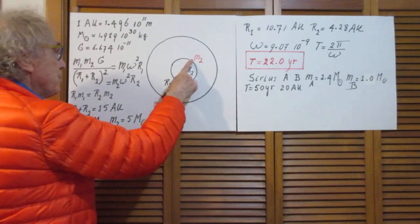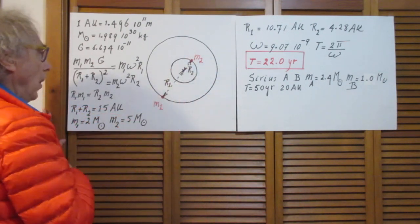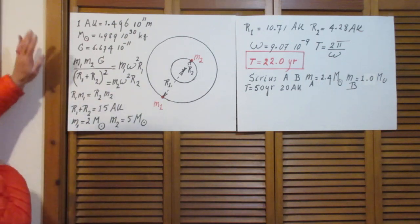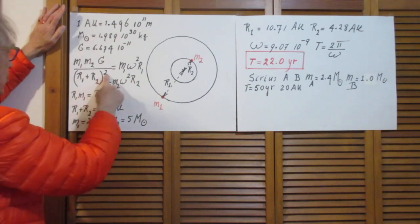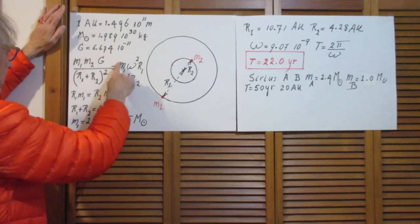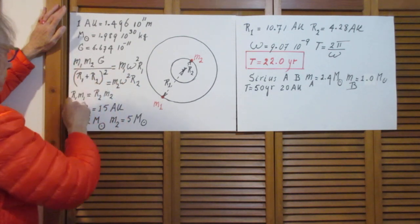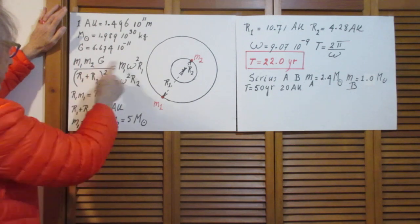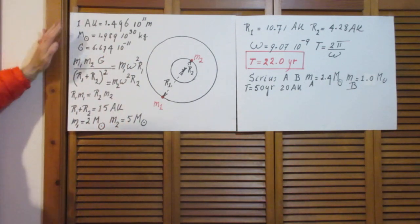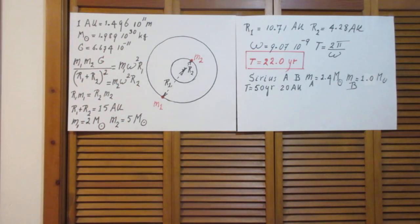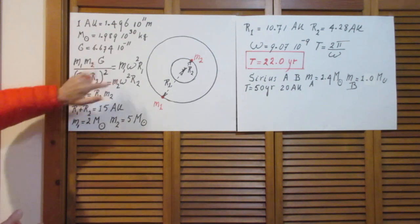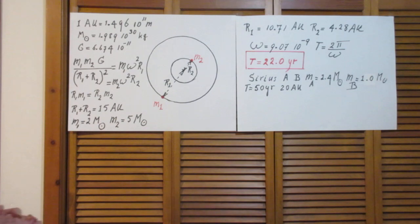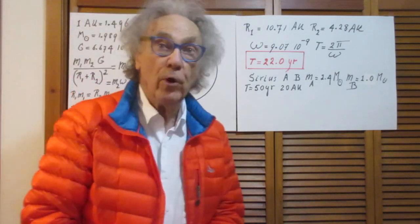And for the other star, the centripetal force is M2 omega squared R2. You can solve this problem either by using the relationship that cancels out M1, or you use the relationship that cancels out M2. Whichever one you choose, you will get, of course, the same result. So pick one of these and combine it with the center-of-mass equation. High school algebra, nothing more.